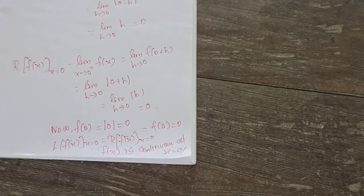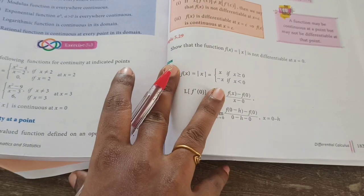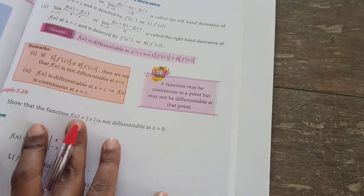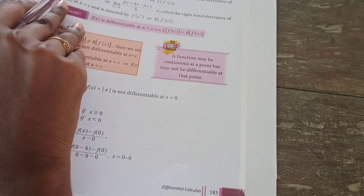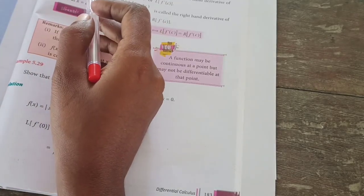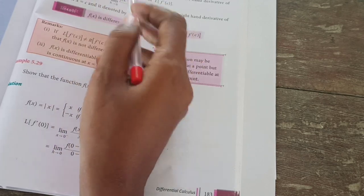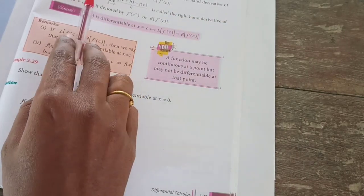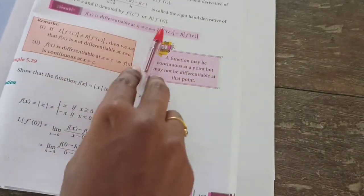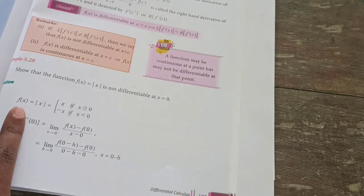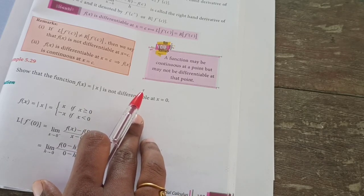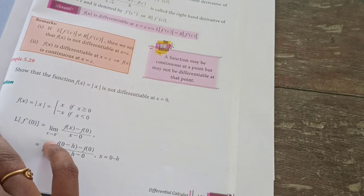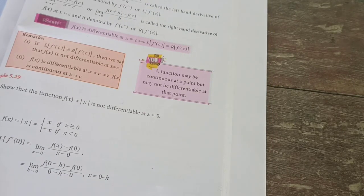Let us move to the next section. Take your books; no need to take notes, just go through. Next heading is differentiability at any point. Left-hand derivative: limit x tends to c minus of f of x minus f of c divided by x minus c — this is the left-hand derivative of f of x at x equal to c. Right-hand derivative is defined similarly. Note: a function may be continuous at a point but may not be differentiable at that point — continuity and differentiability are different.